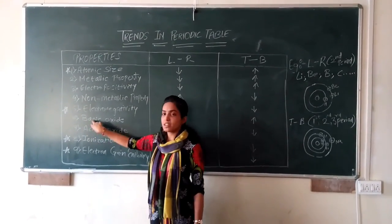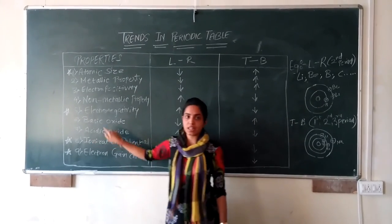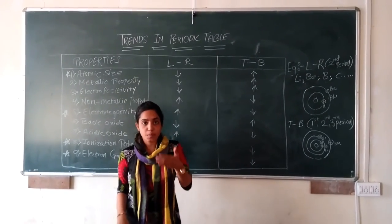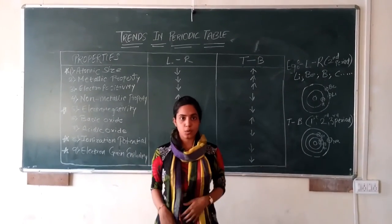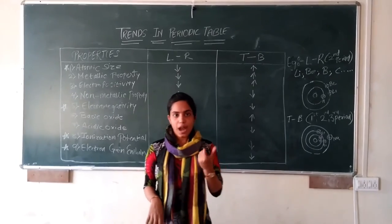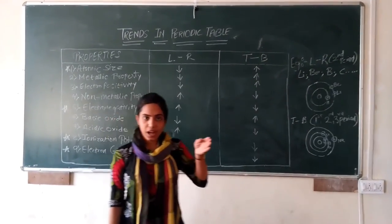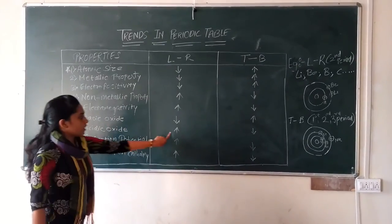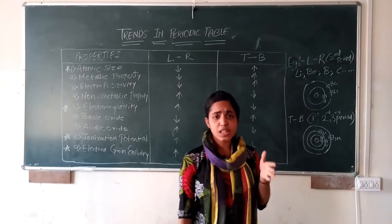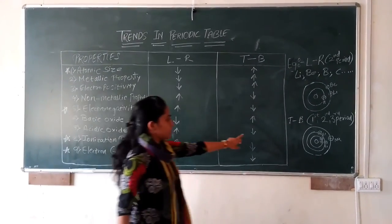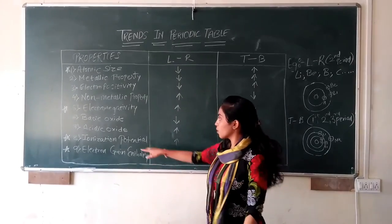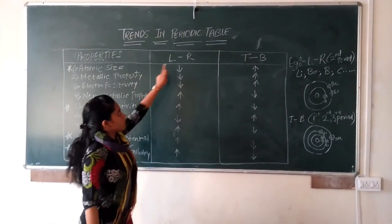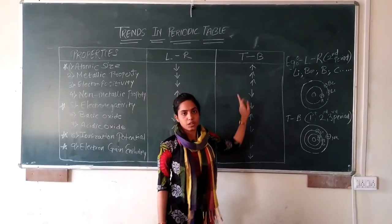Now, two important points: acidic oxide and basic oxide. Acidic oxide refers to oxides that produce acids — for example, HCl and HF. From left to right, acidic oxide property increases, and from top to bottom it decreases. Basic oxide is the opposite: from left to right it decreases, and from top to bottom it increases. Thank you.